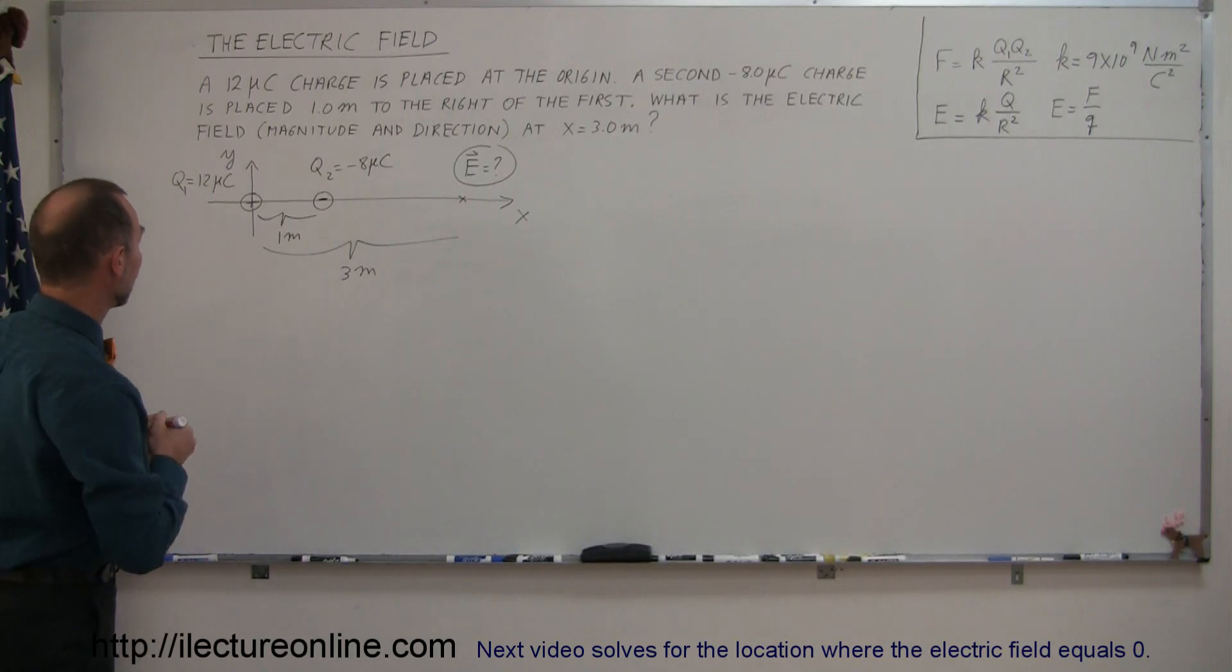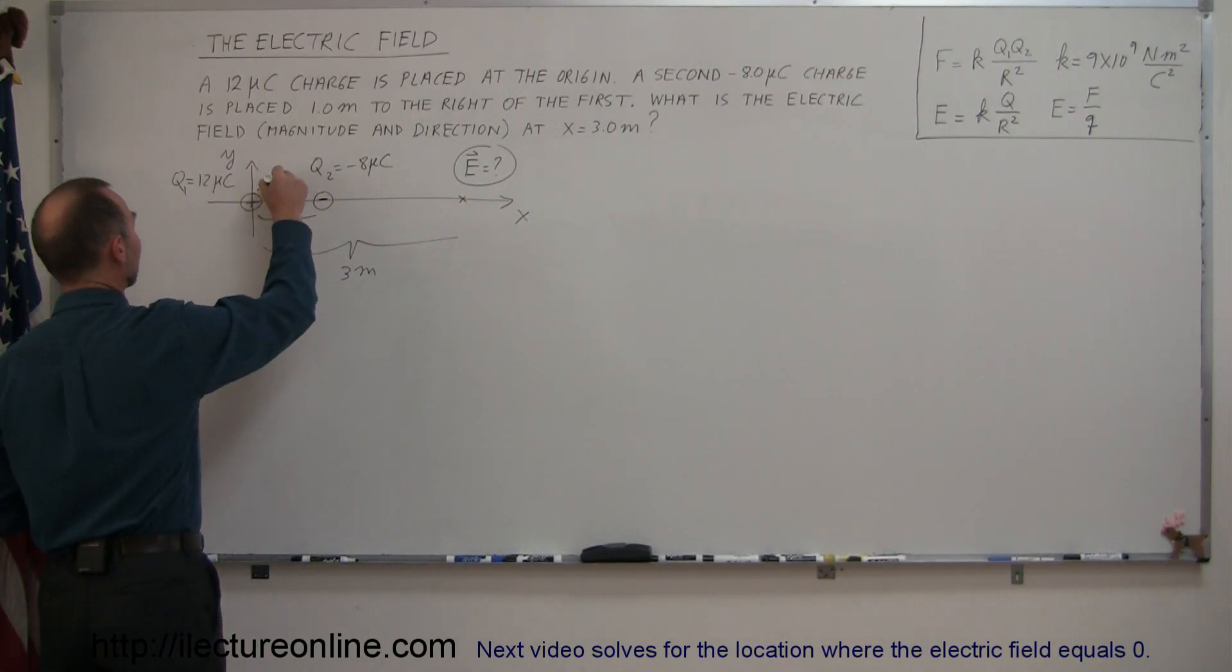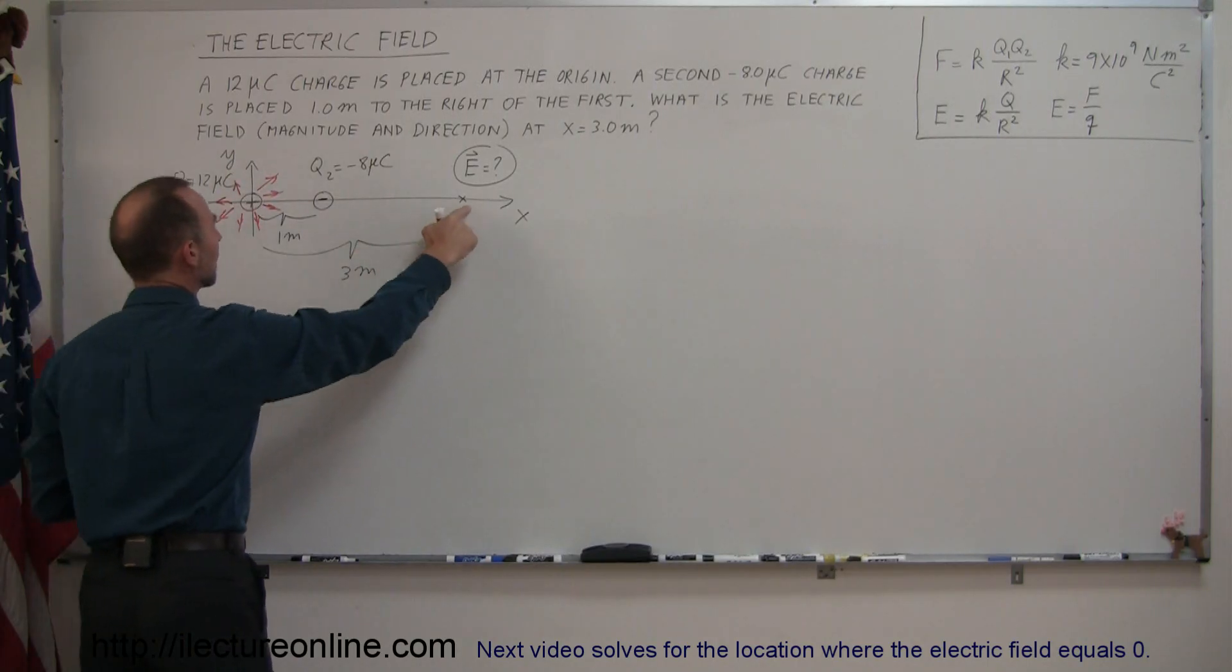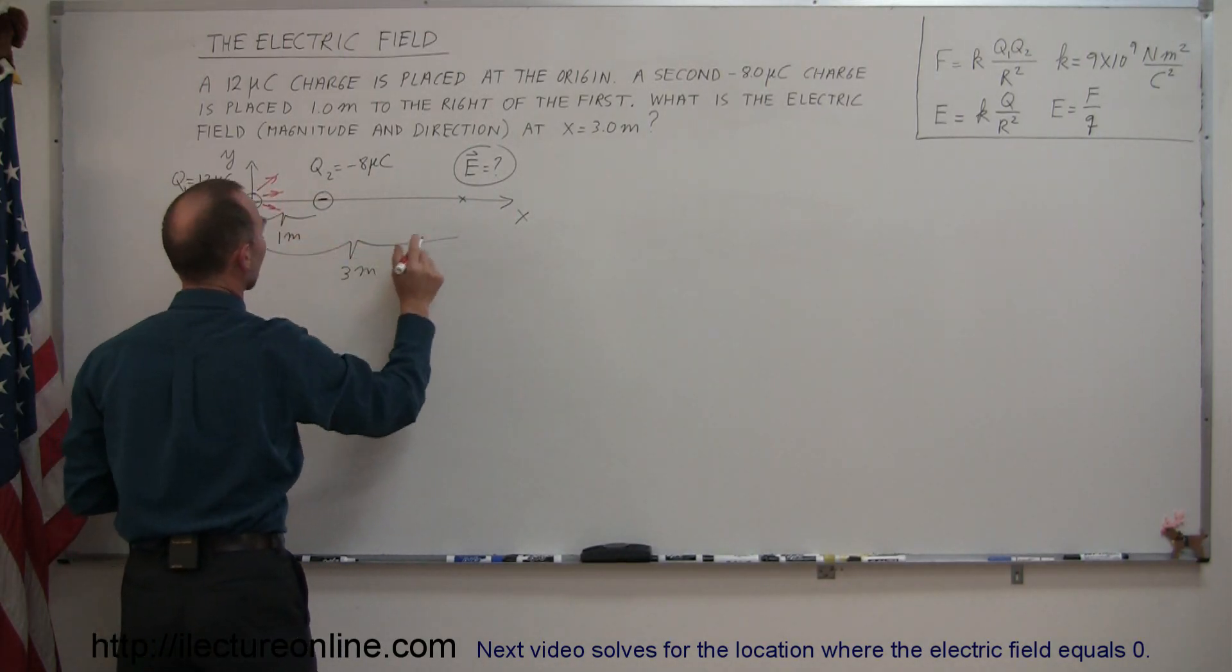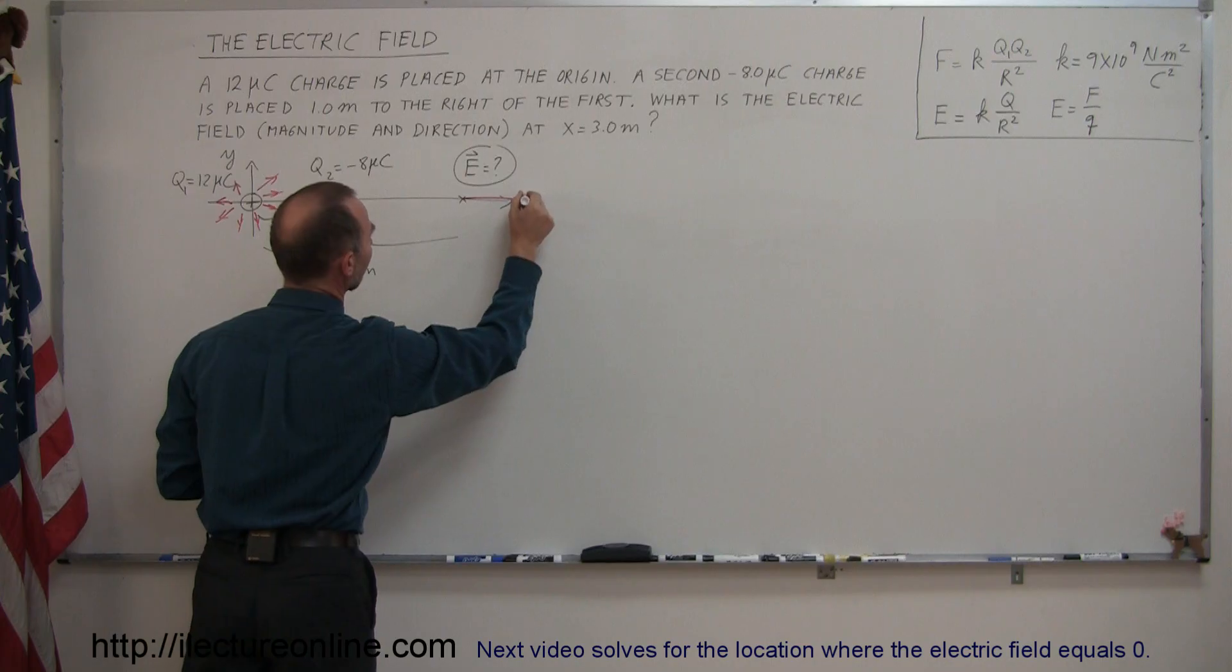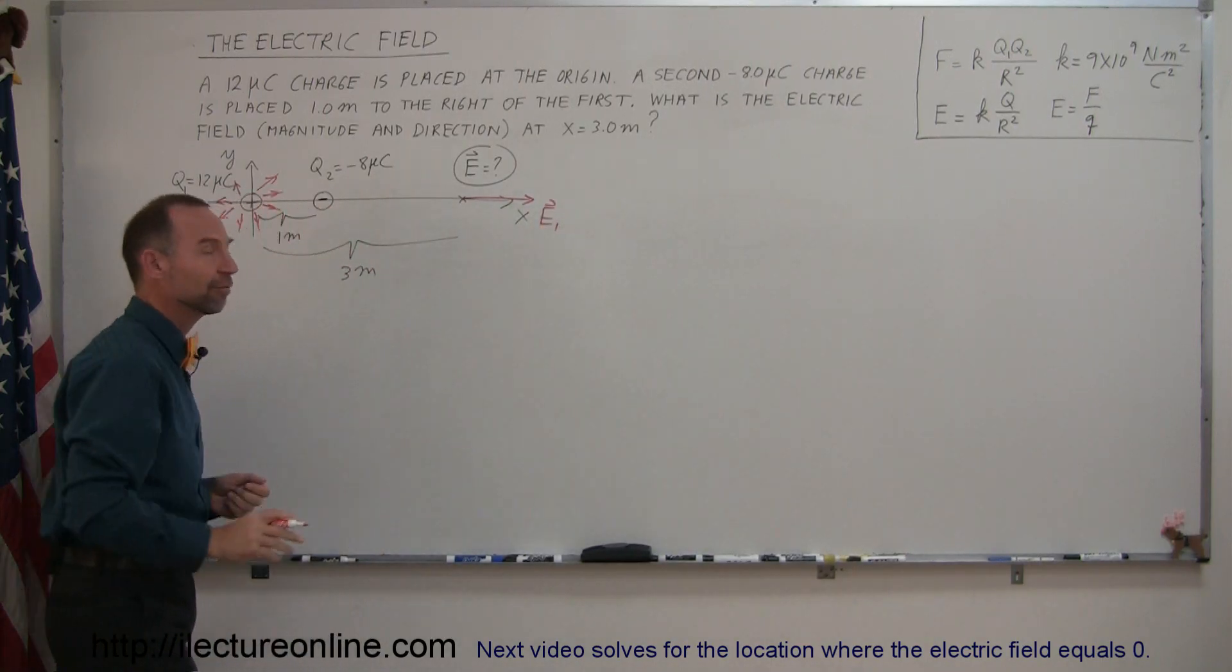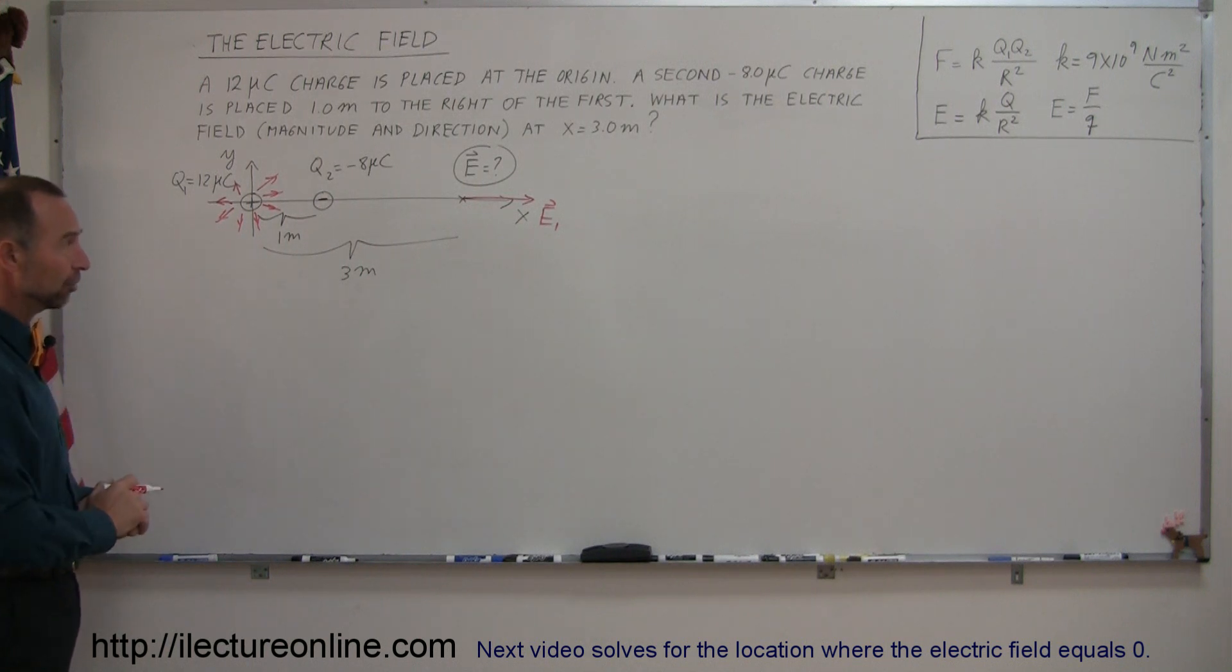Starting with the first charge, we know that since it's positive, the electric field emanates away from the charge. That means when we go over here, the electric field would be to the right due to the presence of that. So there would be E1, the electric field due to charge one at that location.